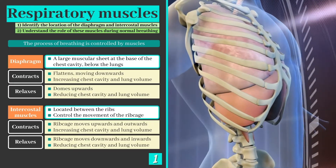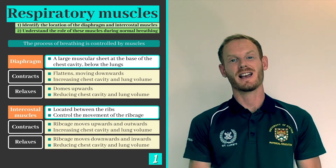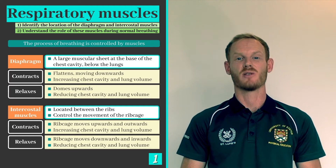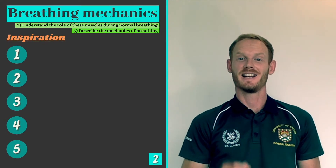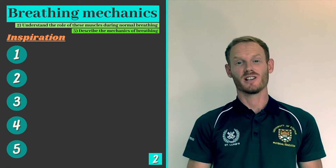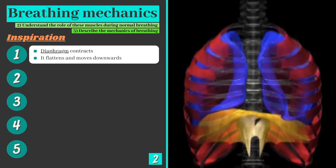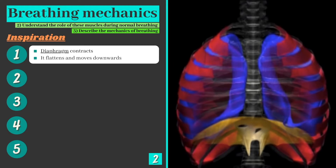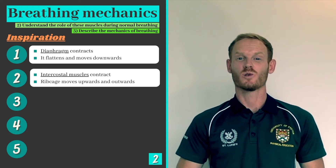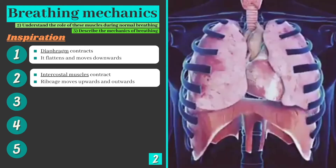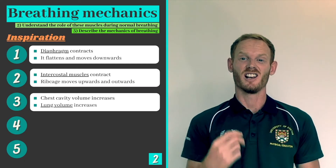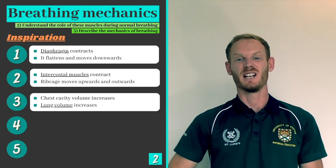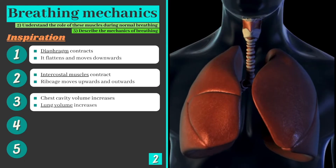So how do these muscles enable us to breathe? We'll move on to our second and third learning objectives as we look at the mechanics of breathing. The technical term for breathing in is inspiration, and there are five steps you need to know. Firstly, the diaphragm contracts, causing it to flatten slightly and move downwards. Meanwhile, the intercostal muscles also contract, causing the rib cage to move upwards and outwards. These actions combined cause the chest cavity and the lungs within to expand, increasing their volume.